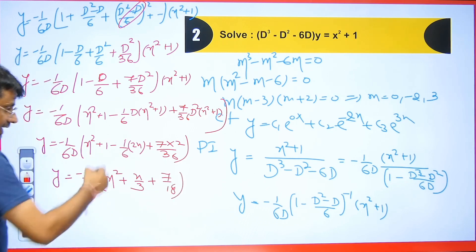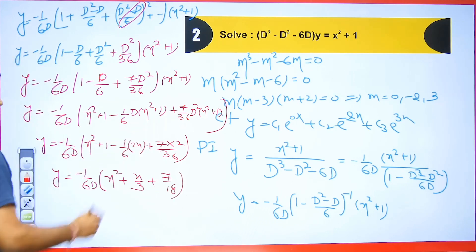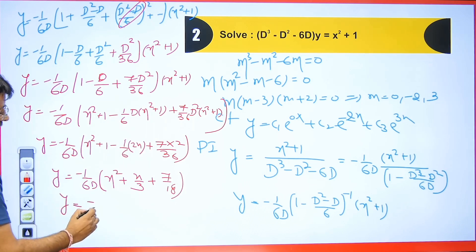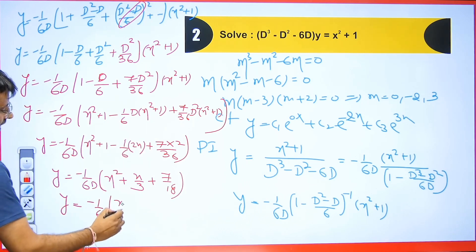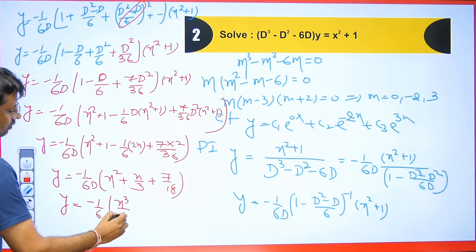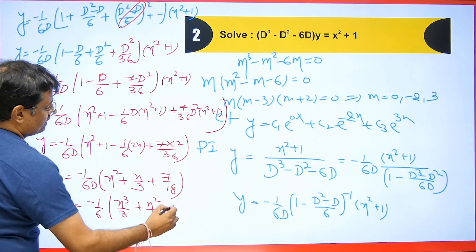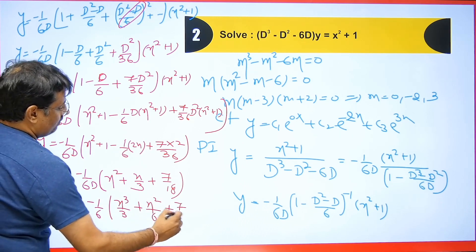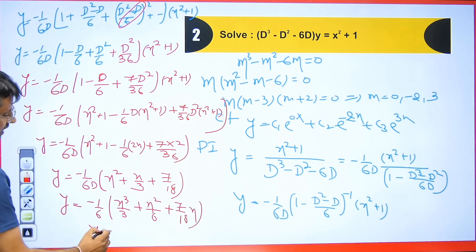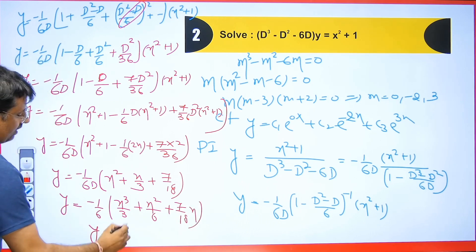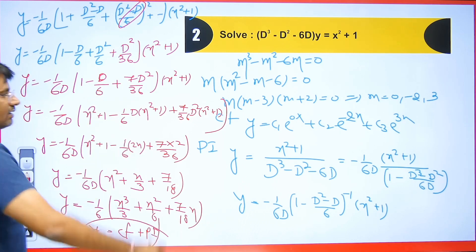Since we have 1/D remaining, we integrate once. Integrating: minus 1/6 times [x³/3 minus x²/6 plus 7x/18]. This is the PI, and the final answer is CF plus PI. In this way we solve this type of equation.